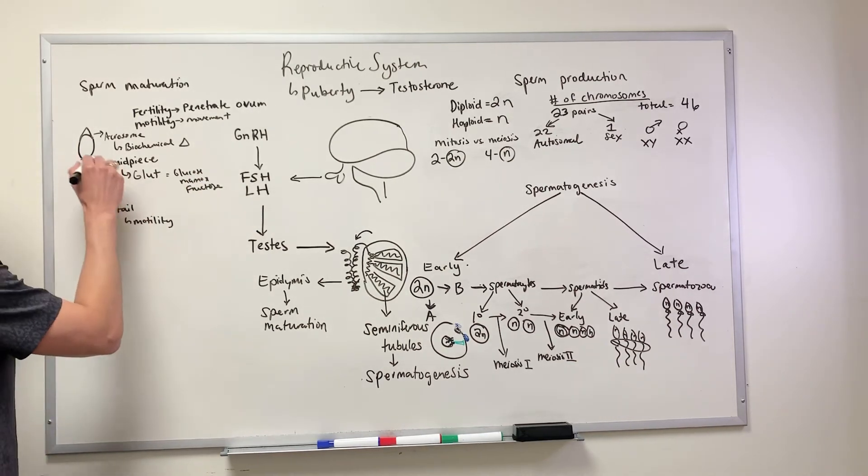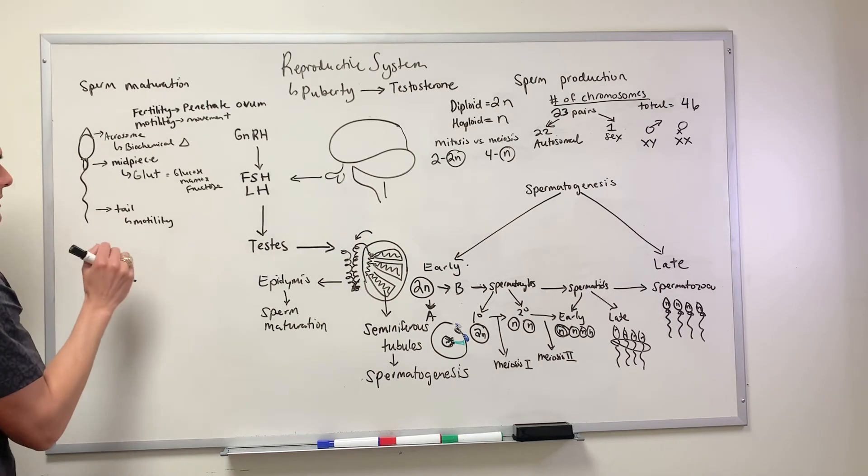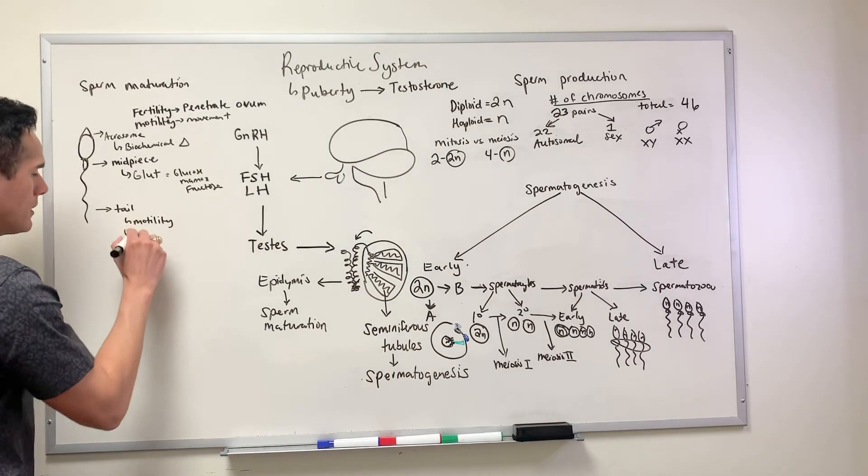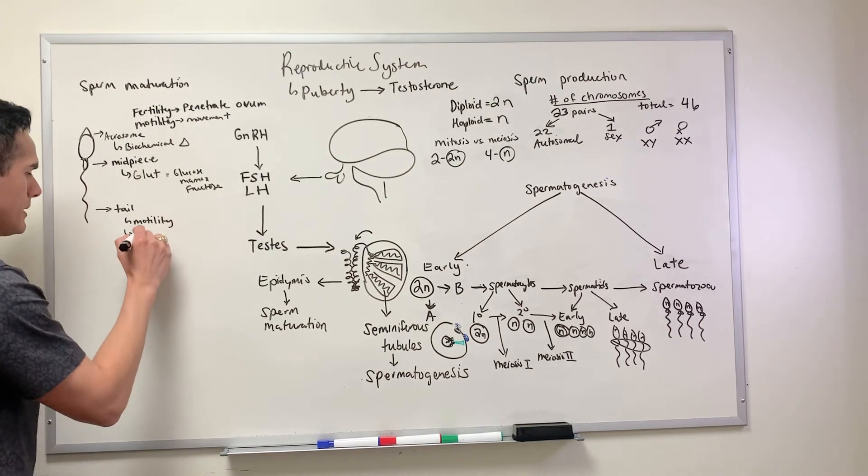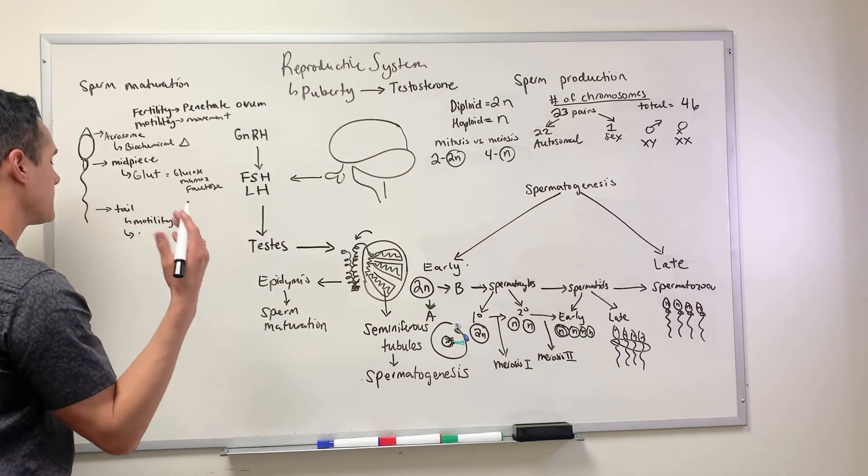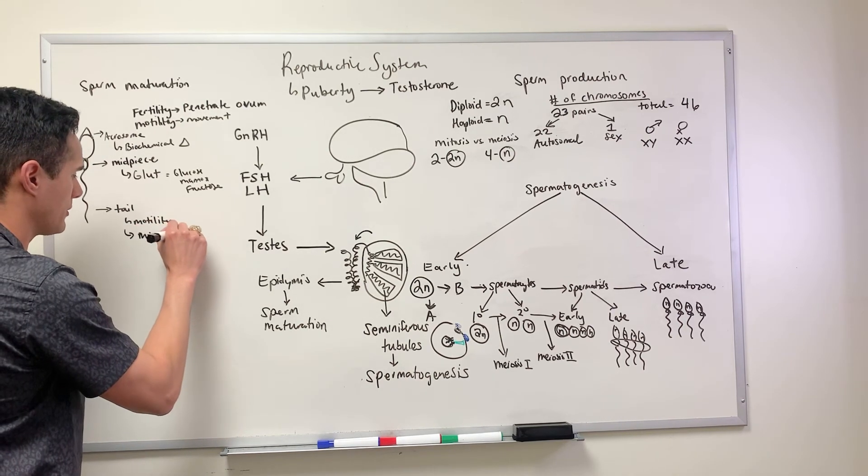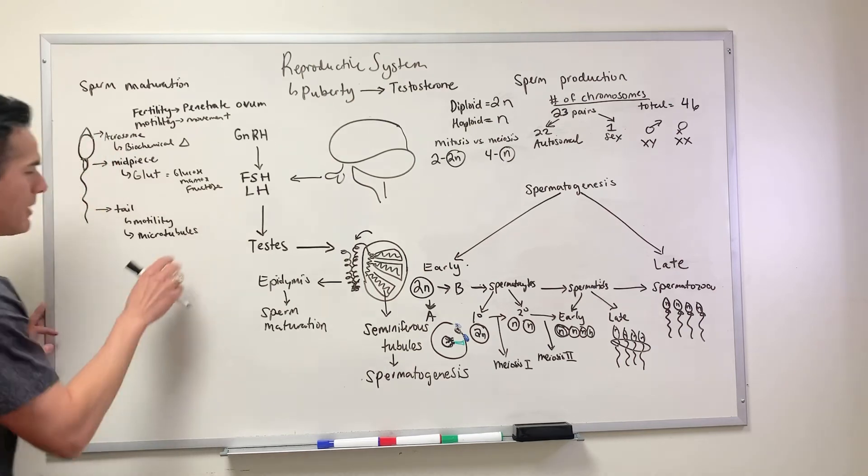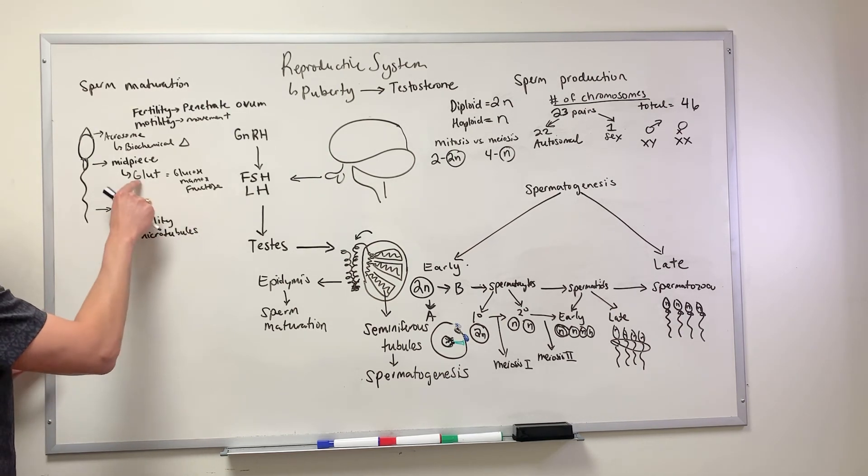How is the tail modified to improve the motility? What happens is we're changing some of the microtubules, so we're modifying the microtubules which is what makes up the tail.